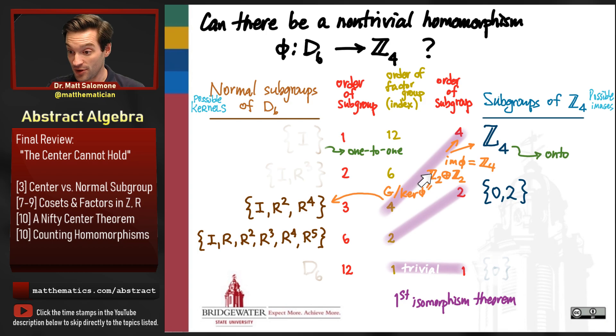It's actually Klein 4, Z2 direct product Z2. It's actually a more general reason why we could have known that. I call it the nifty center theorem that we're going to talk about in another video from now. But, so it's not cyclic, and yet the image is a cyclic group in this case.